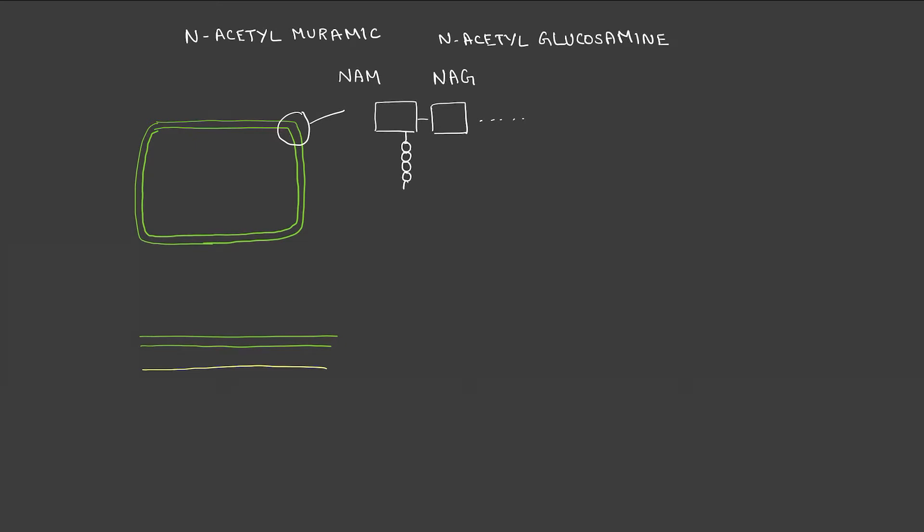There is a pentapeptide linked to the N-acetyl muramic acid and several enzymes cross-link these peptides resulting in a tightly knit structure that is responsible for the structural strength of the cell wall. These cell walls are prominent in the gram-positive bacteria.